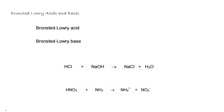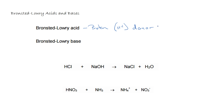Let's start by looking at Brønsted-Lowry acids and bases. A Brønsted-Lowry acid is a proton donor. Because a hydrogen ion which has lost an electron is essentially a proton, we can also say that it's an H⁺ donor. And a Brønsted-Lowry base is a proton acceptor, or an H⁺ acceptor.